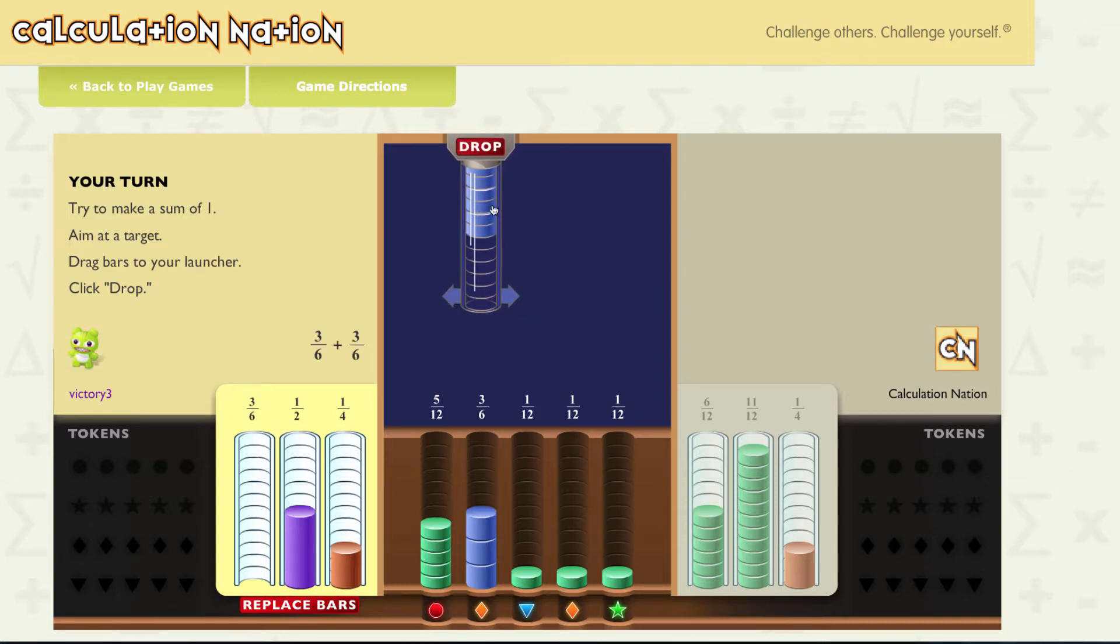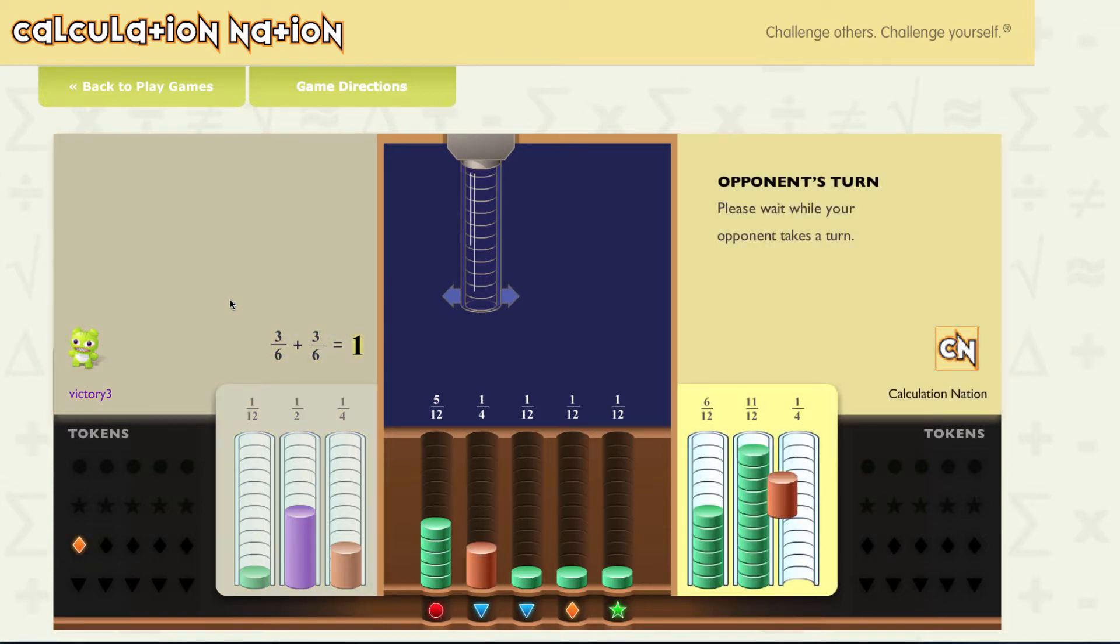They take a fraction and put it into the launcher. They put it over a target fraction and drop their fraction on top. When they make a sum of one, they get the token that was underneath the target fraction.